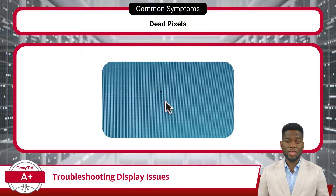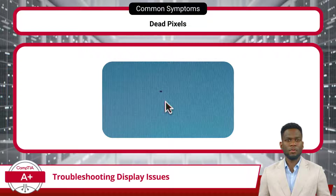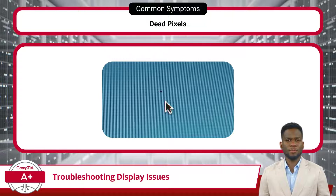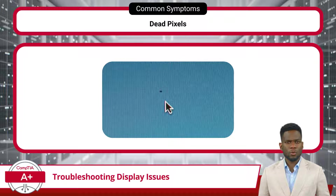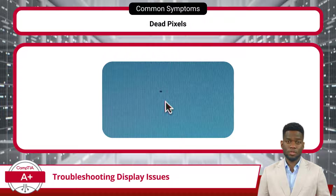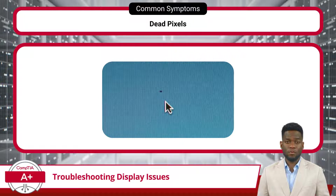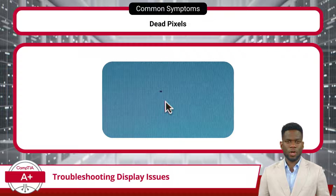We also have Dead Pixels — individual pixels on the display screen that fail to illuminate, resulting in small black spots that remain dark regardless of the display content. Dead pixels can occur due to physical damage to the display panel or prolonged use. To reduce their occurrence, users should handle displays with care, avoiding applying excessive pressure to the screen and keeping the display away from liquids.